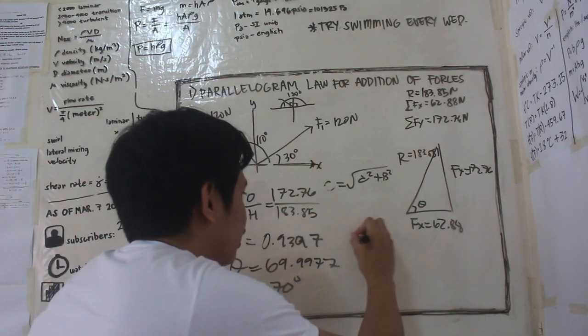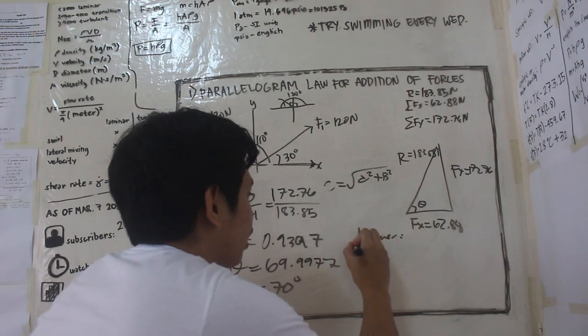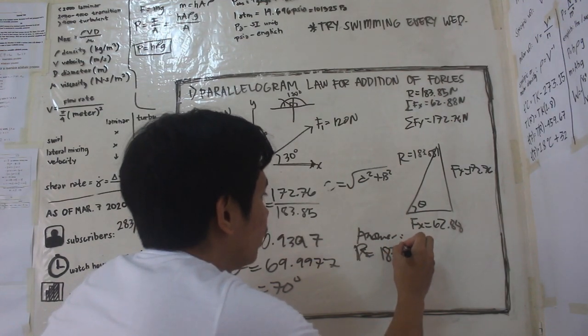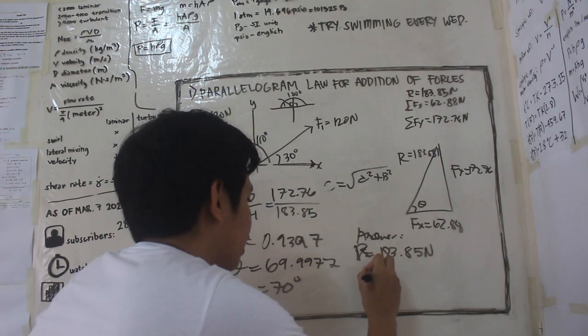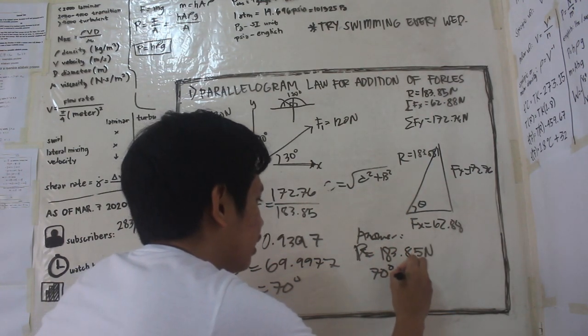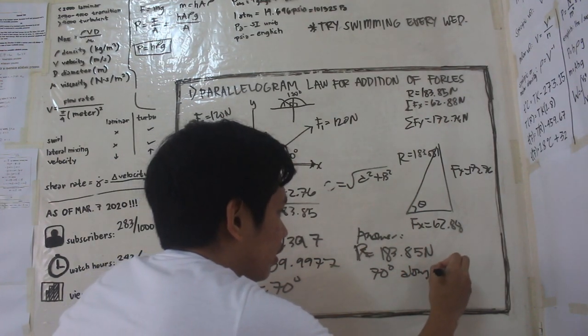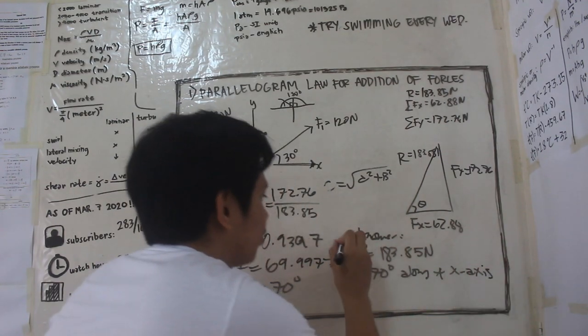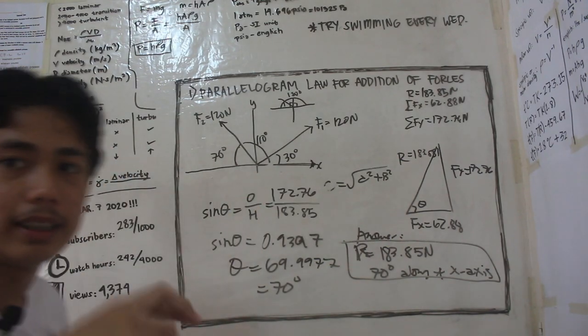So ang answer natin, r is equal to 183.85 newtons na nasa 70 degrees along positive x-axis. Ito yung resultant ng force natin guys.